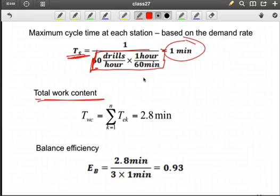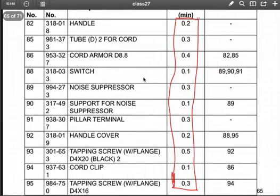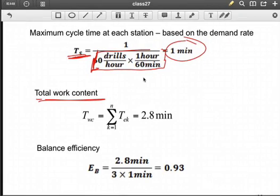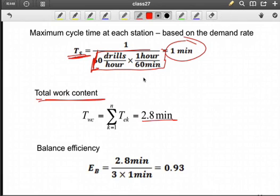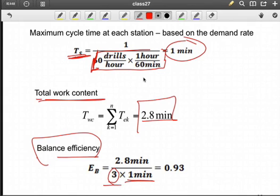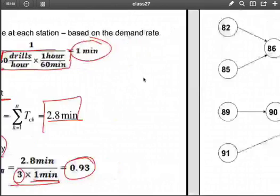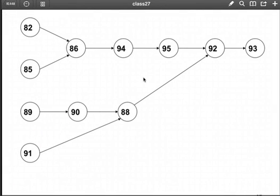Well, if we add our column here to get the total work content, so I add this up, I get my total work content as 2.8 minutes. My balance efficiency, if I use three workstations and one minute, that means I have a total of three minutes, it comes out pretty high. So it looks like we're going to get a fairly good line balance here, even before we assign our stations. Now, as I said, a good starting point is to create your precedence diagram based upon the geometry of the product. So in this case, this is what it looks like.